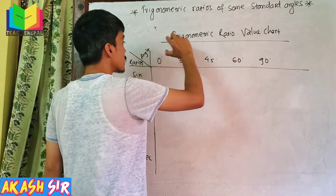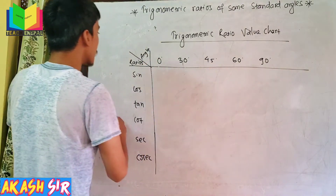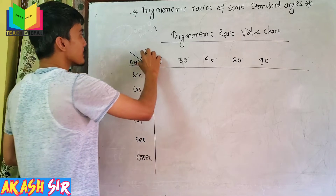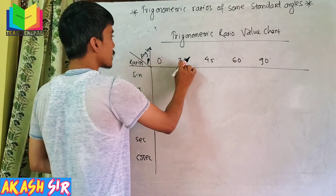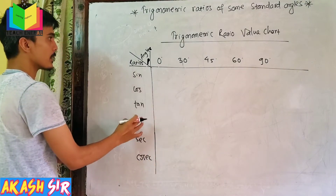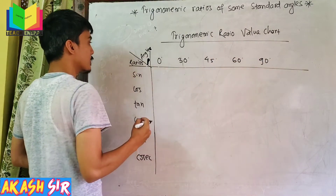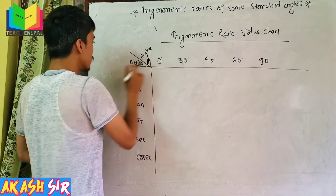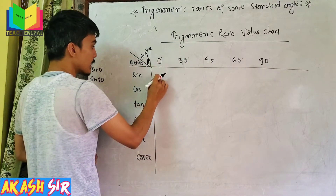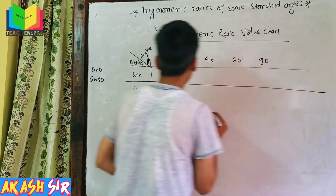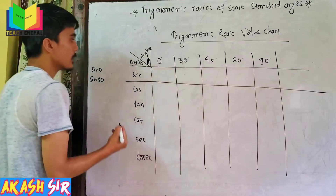I will give you the fixed standard angles: 0, 30, 45, 60, and 90 degrees. This line will give you the standard angles, and I will give you the trigonometric ratios. I will write the value of sin 0, sin 30, and so on.